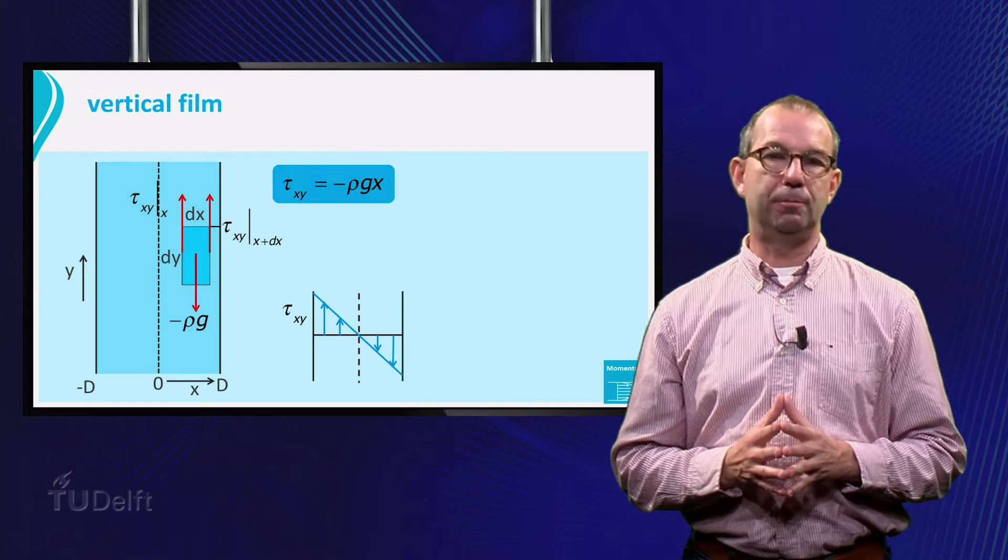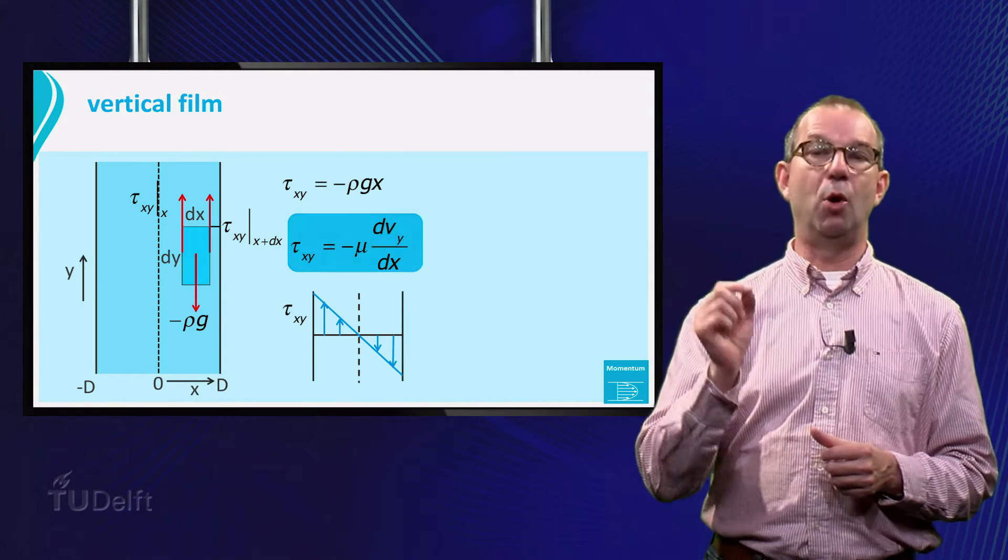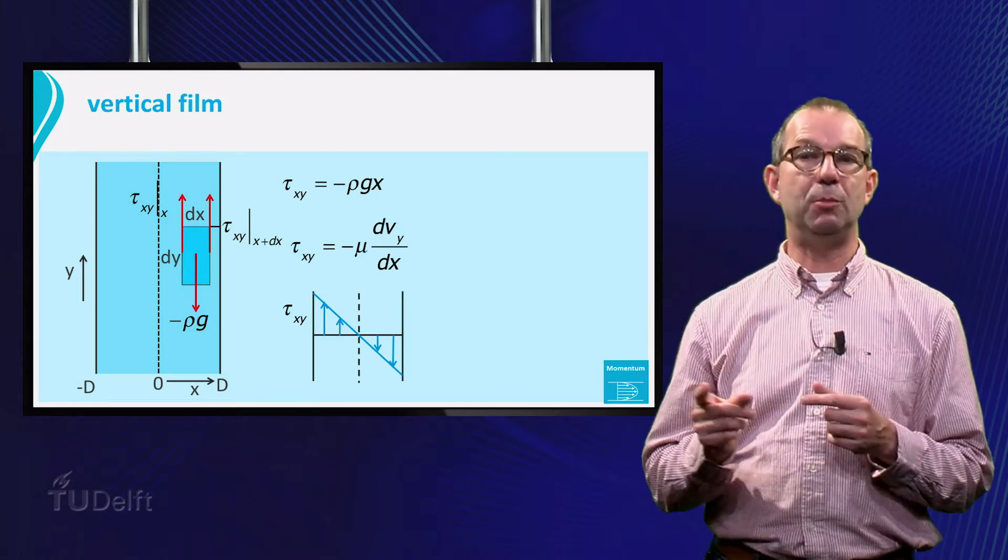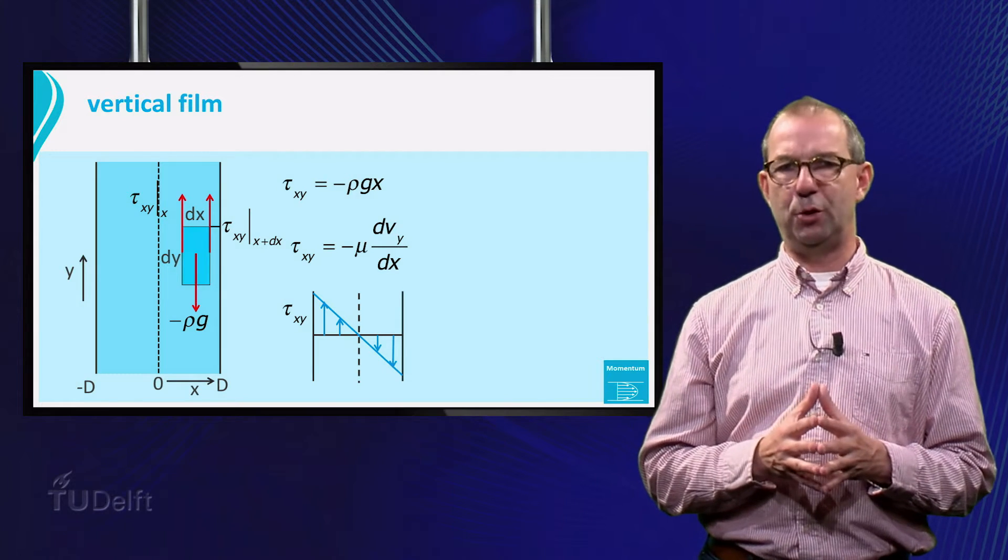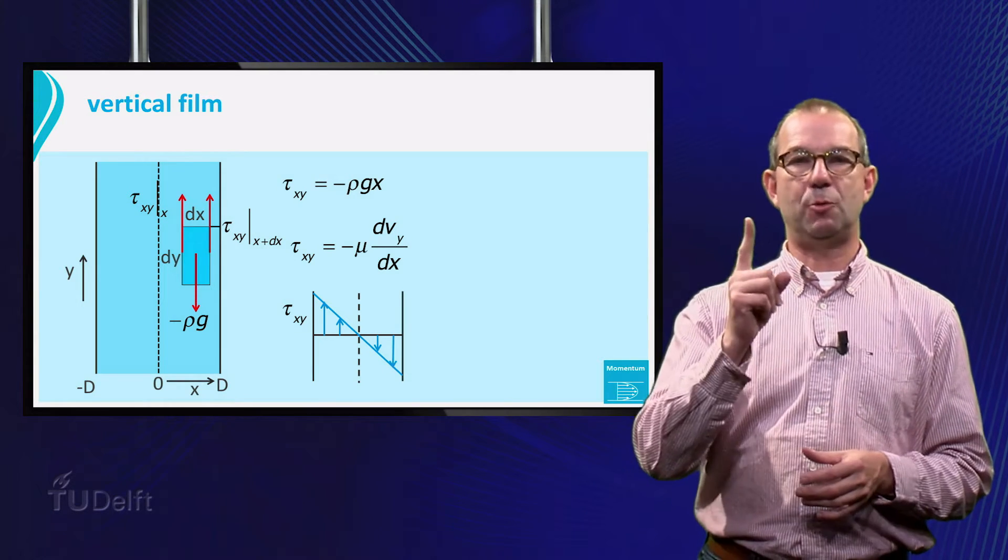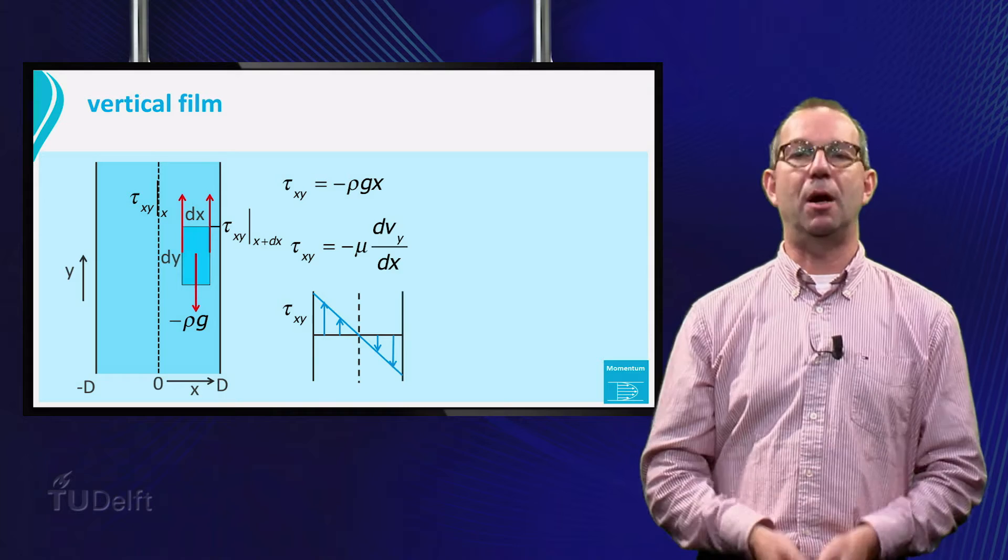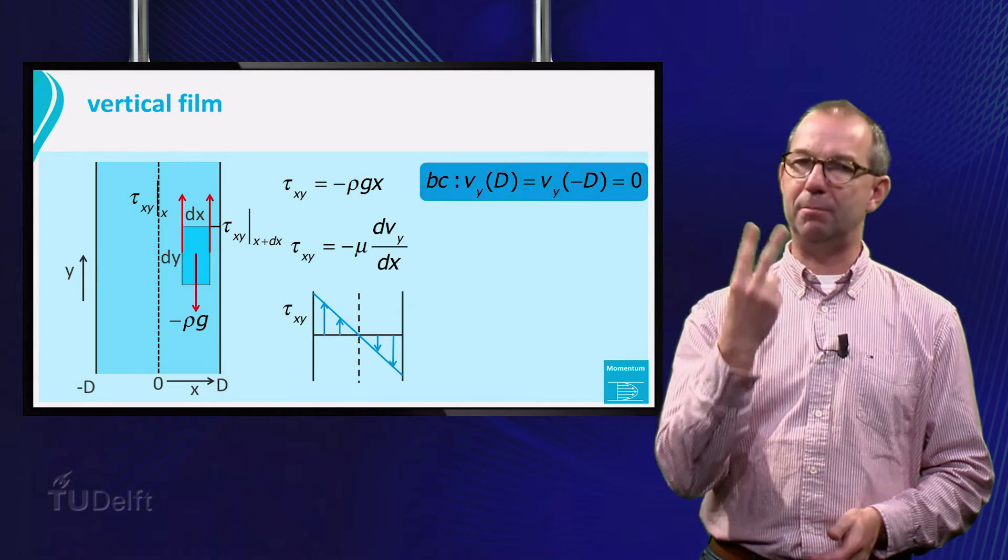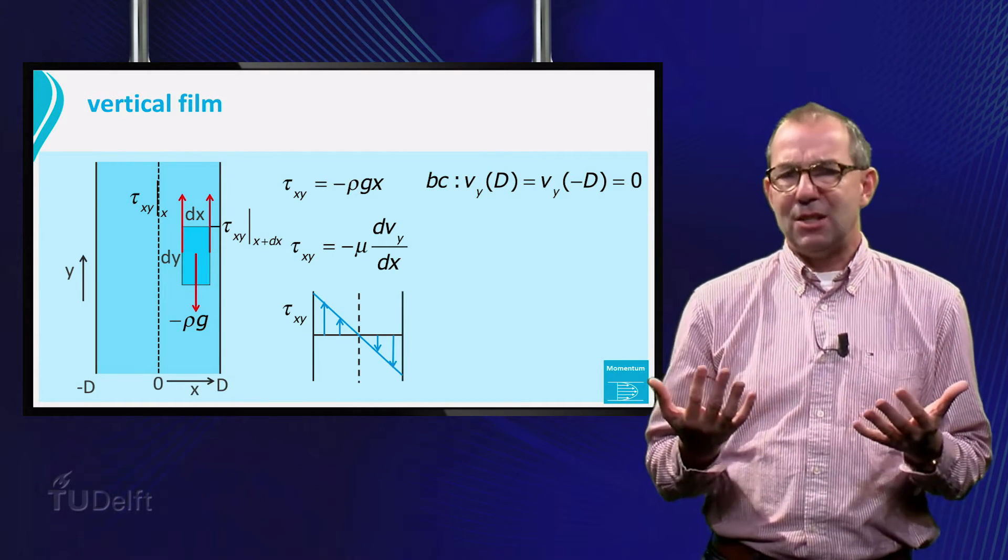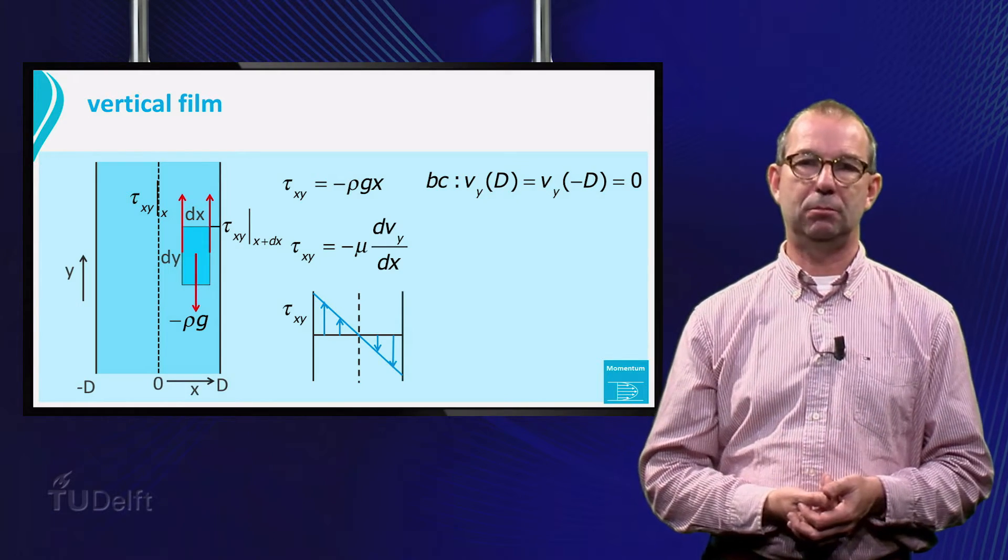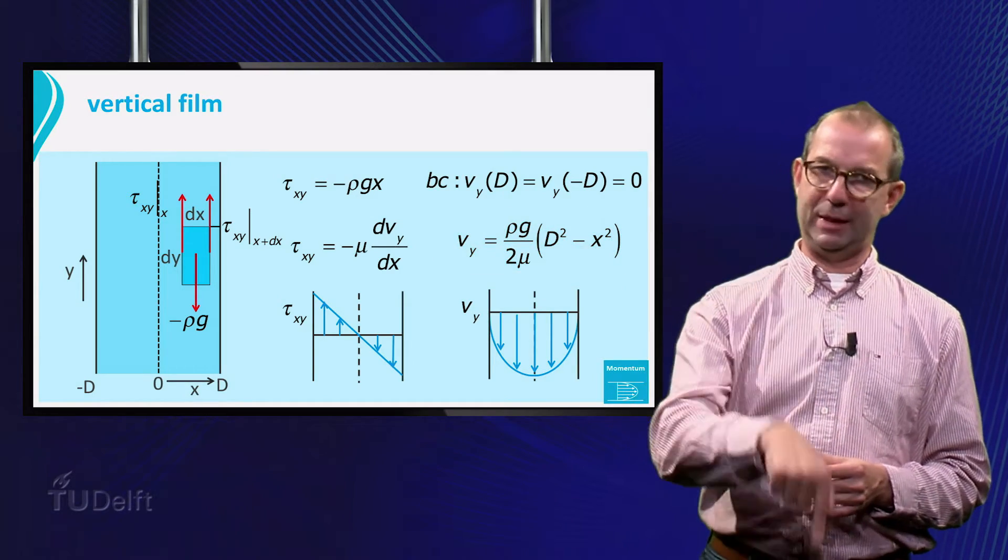Now that we have the shear stress profile, we can compute the velocity profile. Here we use that we are working with a Newtonian fluid. So we have the relation between the shear stress and the velocity gradient. From that, we solve the velocity profile. We have to integrate once and thus have one integration constant. This can be found via a boundary condition. We have two of them. Vy is zero at x is d and at x is minus d. But these are actually the same due to the symmetry in the problem. Finally, we get the solution. Vy is a parabola and the fluid is flowing downwards as we expected.